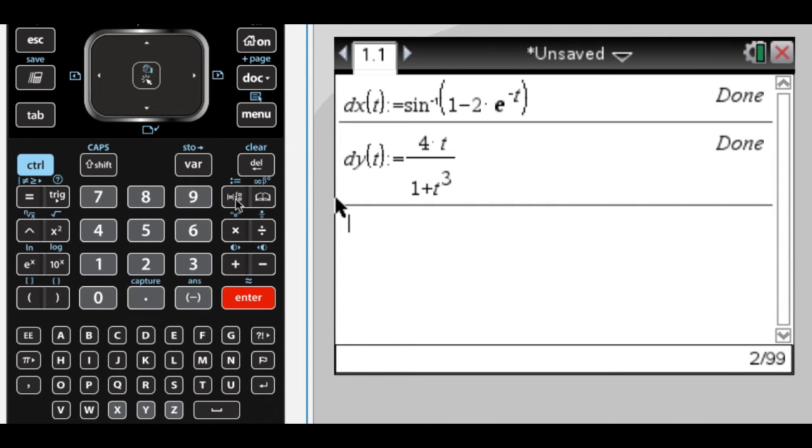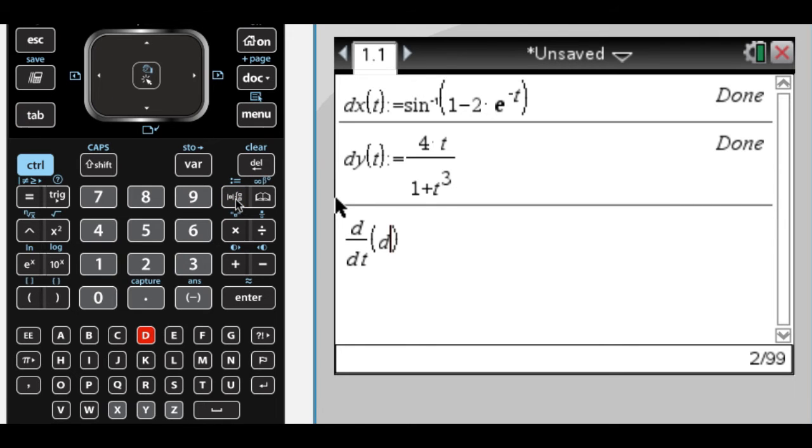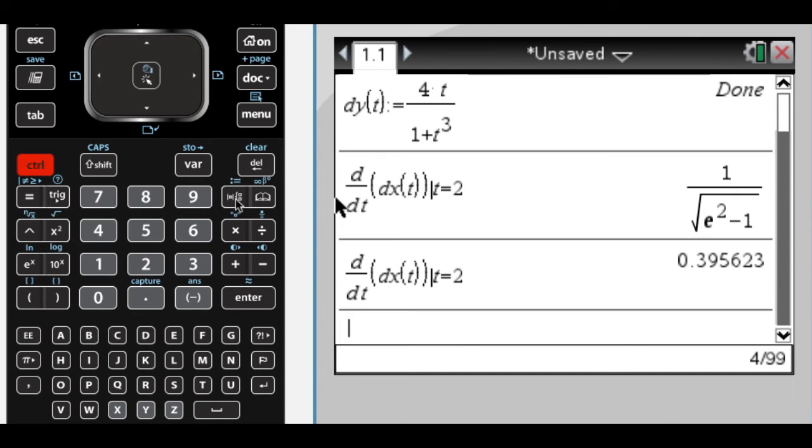So let's do that. We want respect to t of dx of t, and I want that at t equals 2, which gives me an exact value, but we can get the decimal.